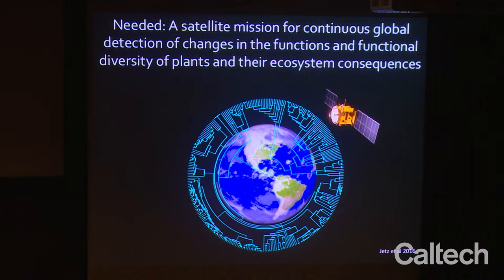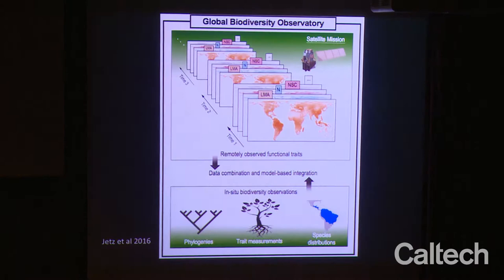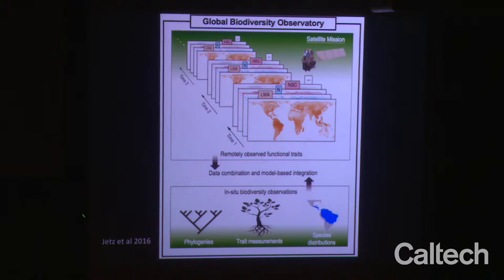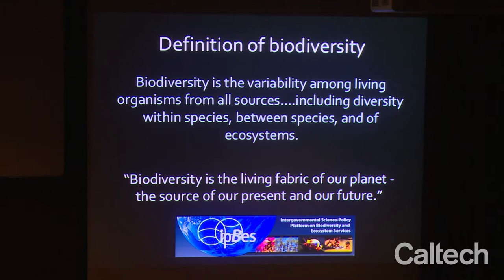Based on the Yetz et al. paper, one thing promoted was a satellite mission for continuous global detection of changes in the functions and functional diversity of plants and their ecosystem consequences — not just plants, all of biodiversity. From that series of meetings, we came up with the idea of a global biodiversity observatory that would integrate remotely sensed data with on-the-ground phylogenetic, functional trait measurements, and species distribution models.